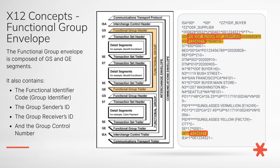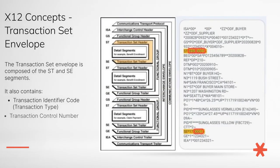The group control number starts with 123 in this example. The transaction set envelope is composed of ST header and SE trailer segments. It also contains a transaction identifier code or transaction type — in this example it's 850, which is the code for a purchase order — and a transaction control number, which in this example is 0001. Each transaction set corresponds to a particular type of business transaction, such as a purchase order, invoice, or shipment notice.